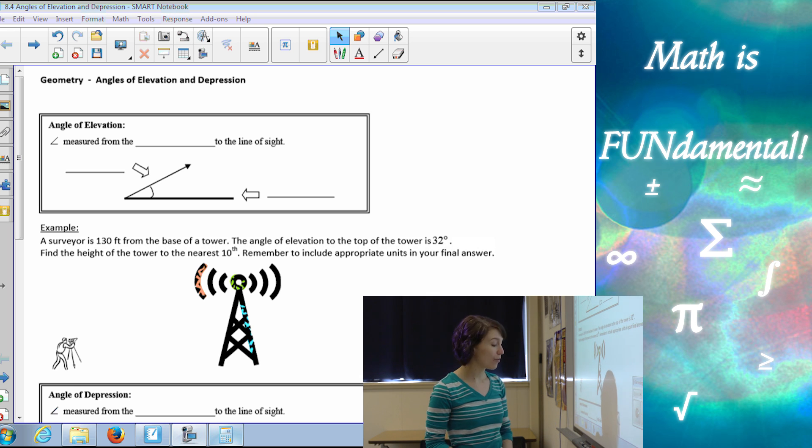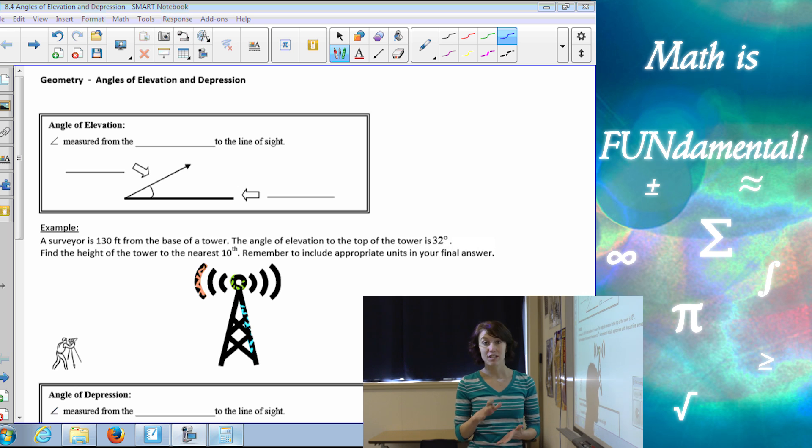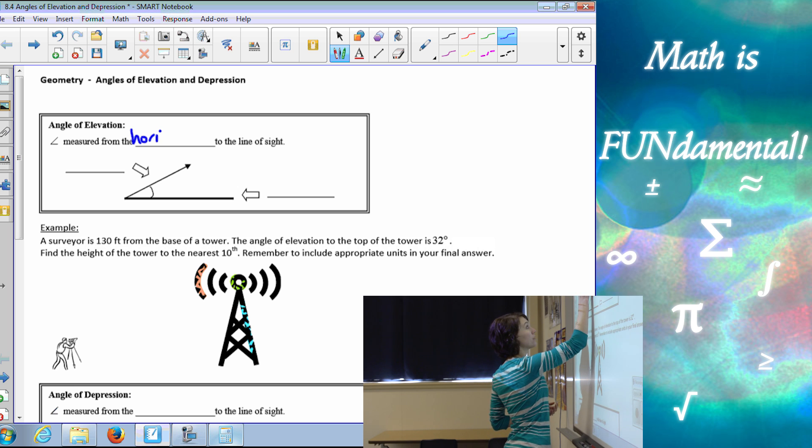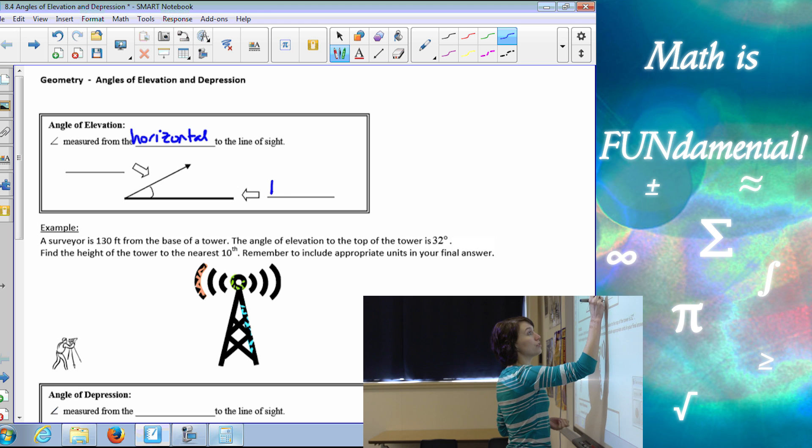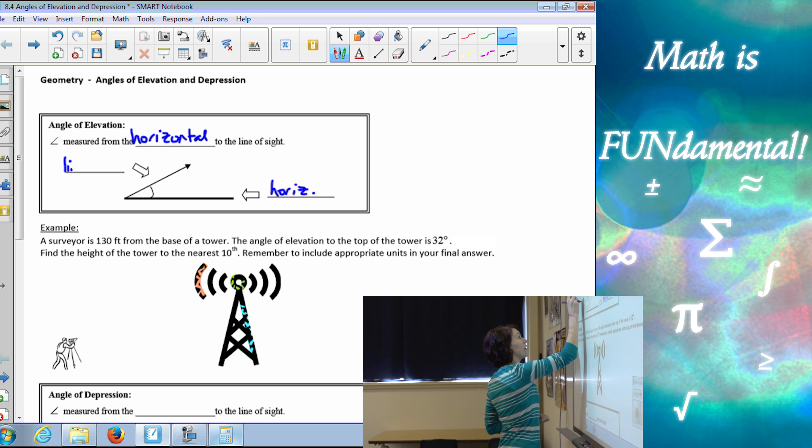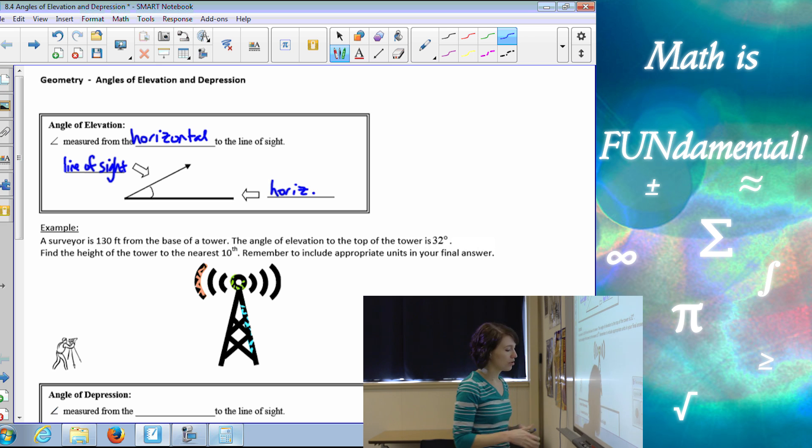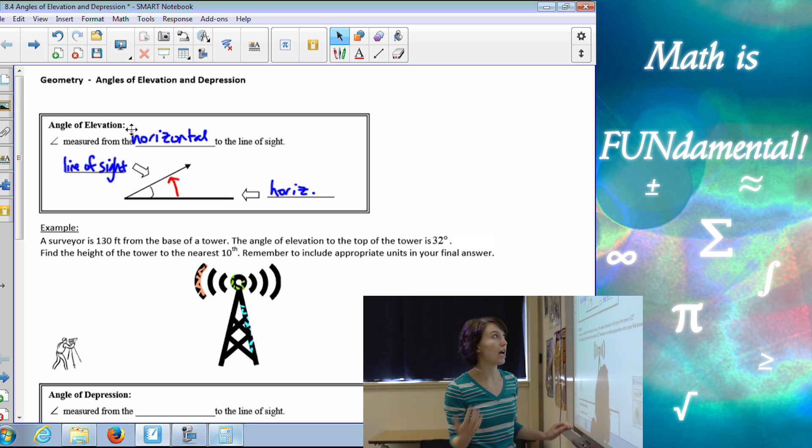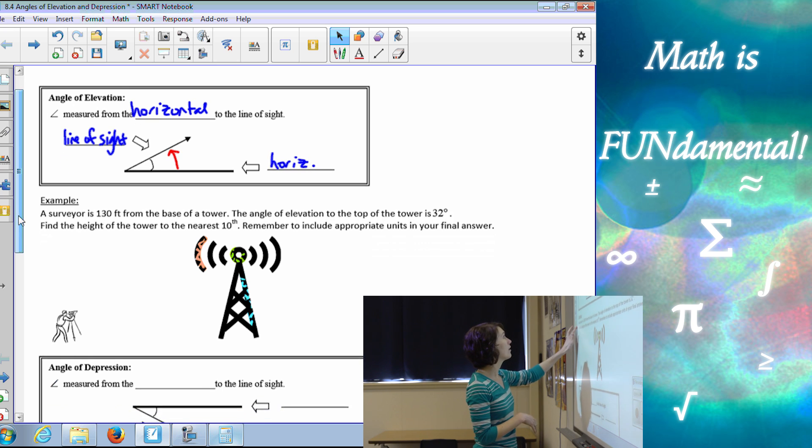So let's start with what an angle of elevation is. An angle of elevation is the angle measured from the horizontal to the line of sight. So here is my horizontal and here is my line of sight. And this is called an angle of elevation because from the horizontal to the line of sight travels upward. So elevation goes up, there is our definition.